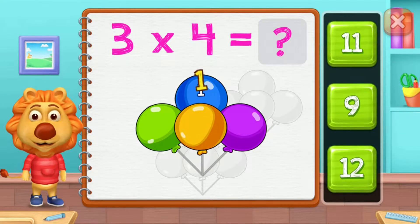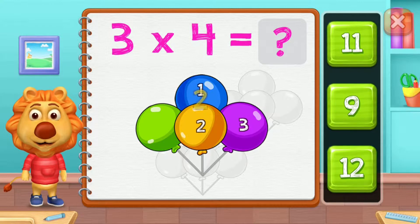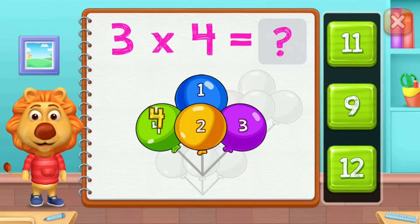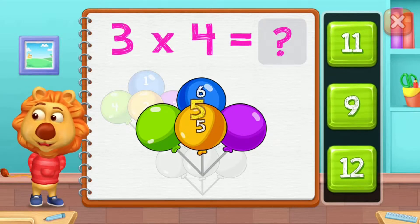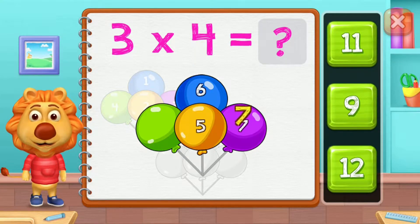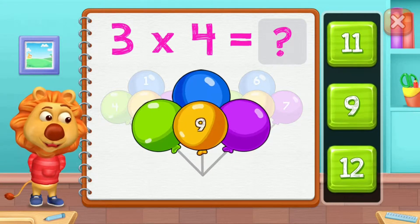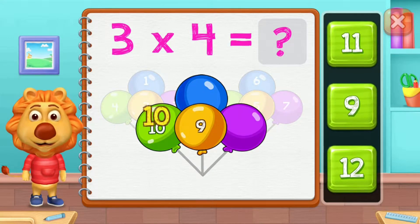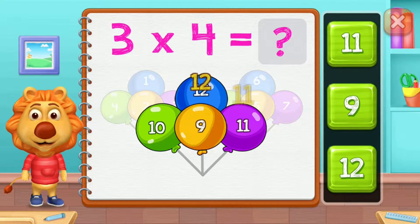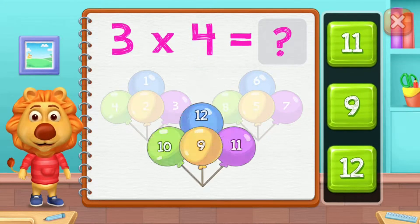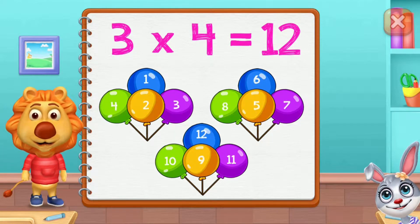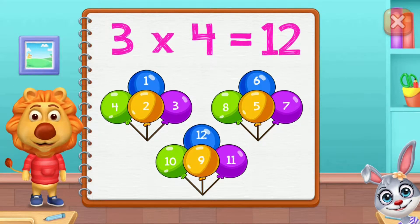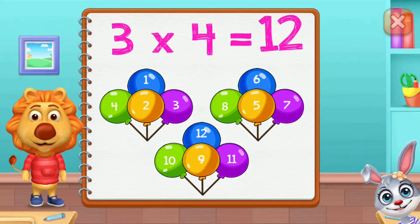1, 2, 3, 4, 5, 6, 7, 8, 9, 10, 11, 12. 3 groups of 4 equals 12.